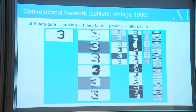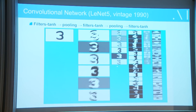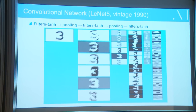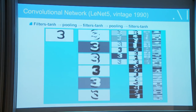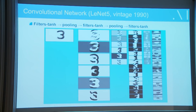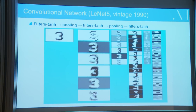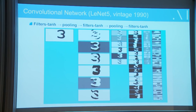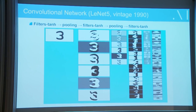This is an example of one of those convolutional nets in action: the input, the first layer, after pooling, the third layer with another set of convolutions, pooling again. You can use this to recognize characters. This was widely deployed in the mid-90s for character recognition — one of the big successes of neural nets at the time. But there was a dark period of about ten years where the machine learning community kind of stopped getting interested in those things.